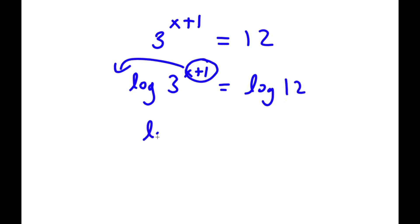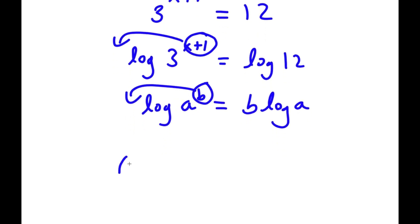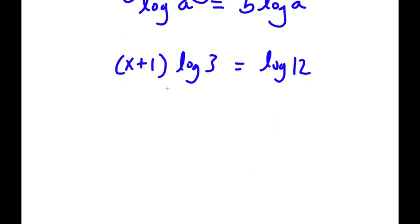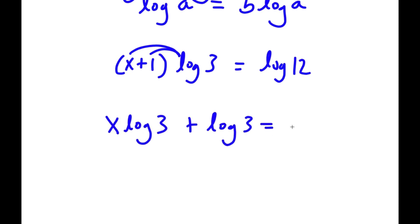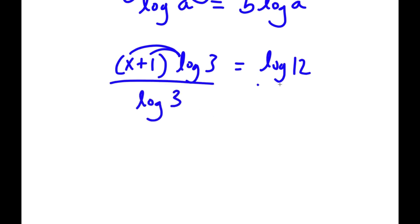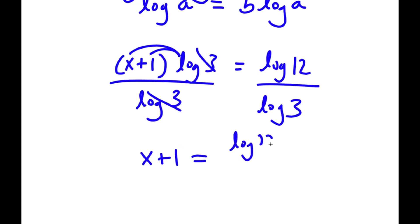I'm going to move x plus 1 to the front, because if I have something in the form log a to the power of b, I can move b to the front, so this equals b times log a. So now I have x plus 1 times log 3 is equal to log 12. I'm going to divide by log 3 on both sides, so these two cancel out, and I'll be left with x plus 1 is equal to log 12 over log 3.